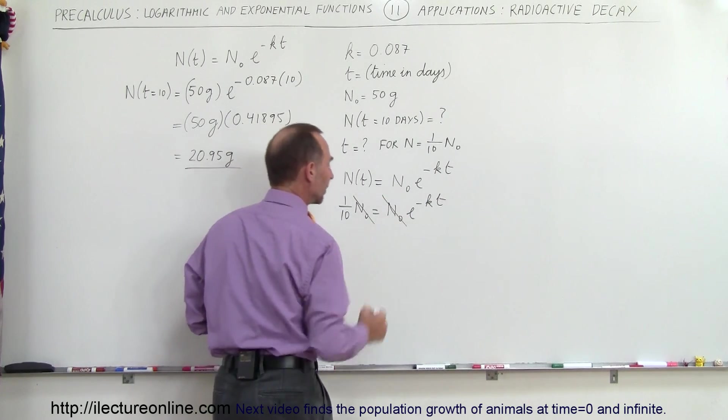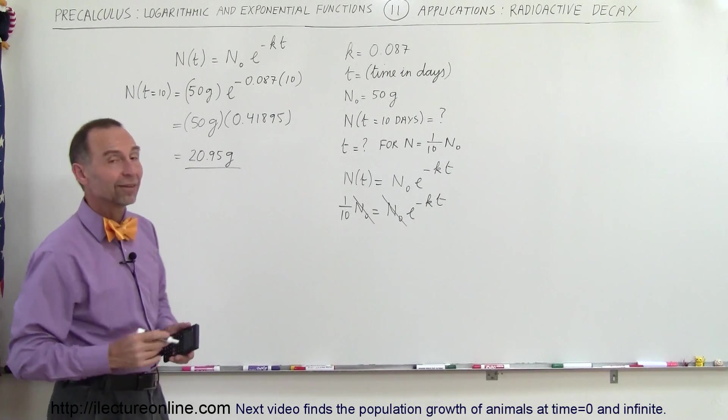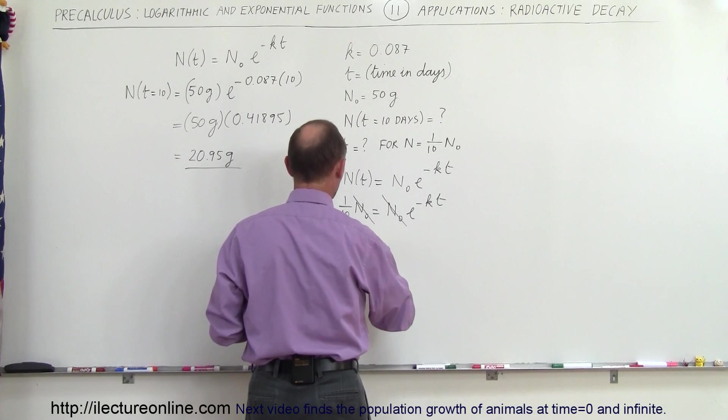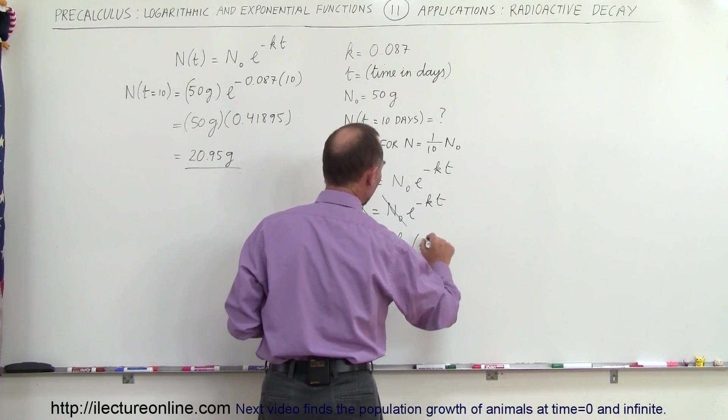Notice that the original amount will cancel from both sides, and now you simply have one tenth equals e to the minus kT. Now you take the natural log of both sides, so we take the natural log of one tenth is equal to natural log of e to the minus kT.